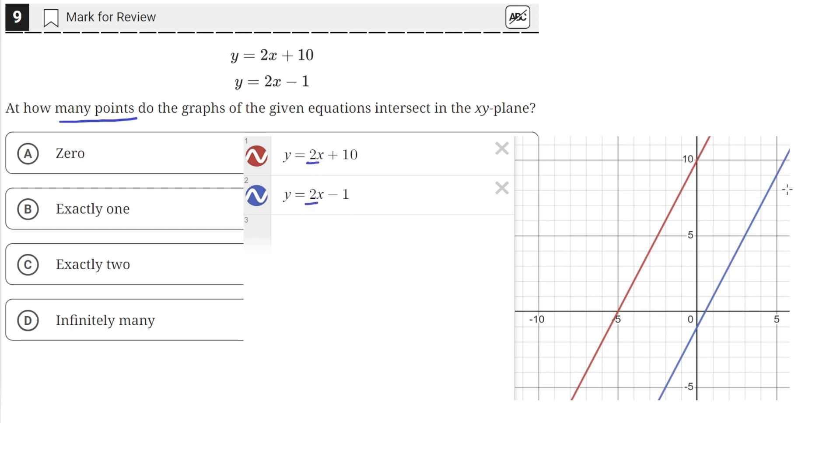And since the slope is the same and they have different y-intercepts, it means that these lines don't intersect. They will continue on like this without intersecting since they have the same slope and they're not overlapping graphs. So there are zero points where the graphs intersect in the x-y plane.